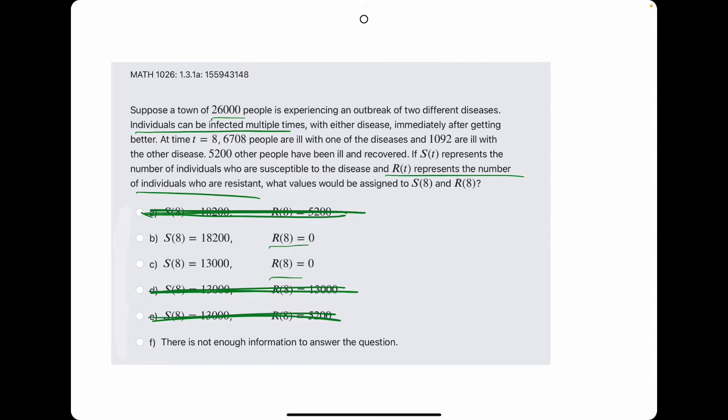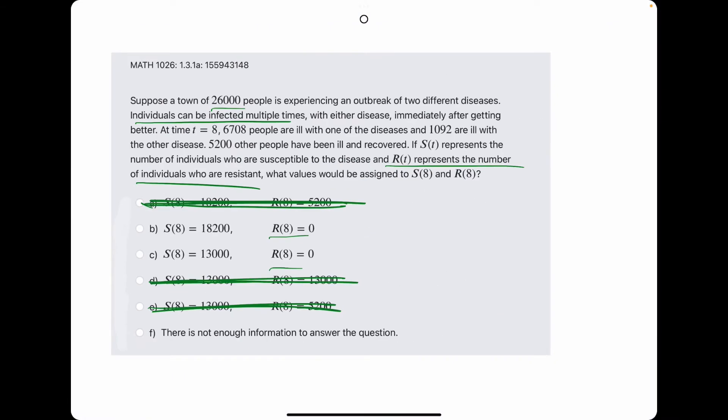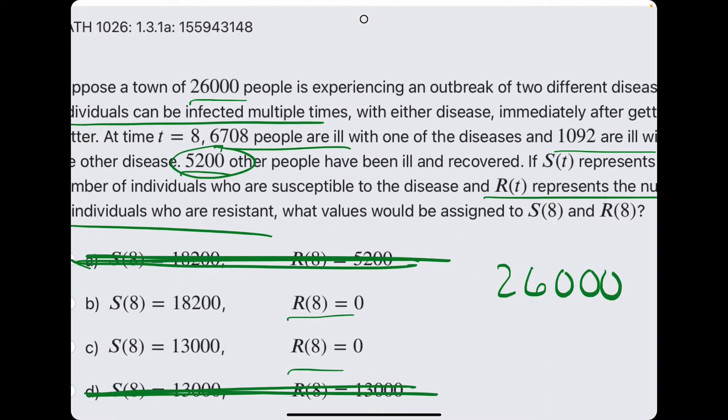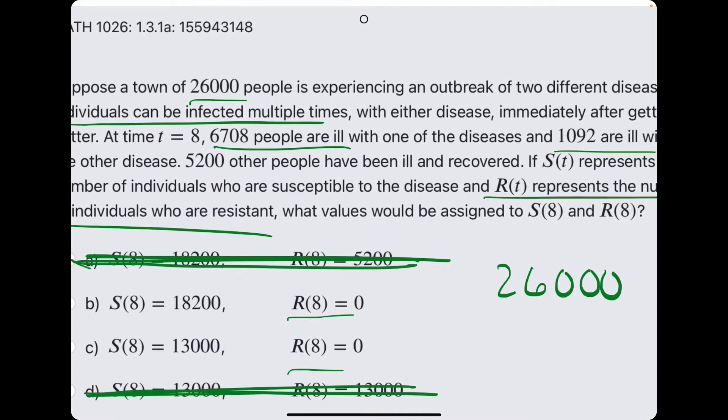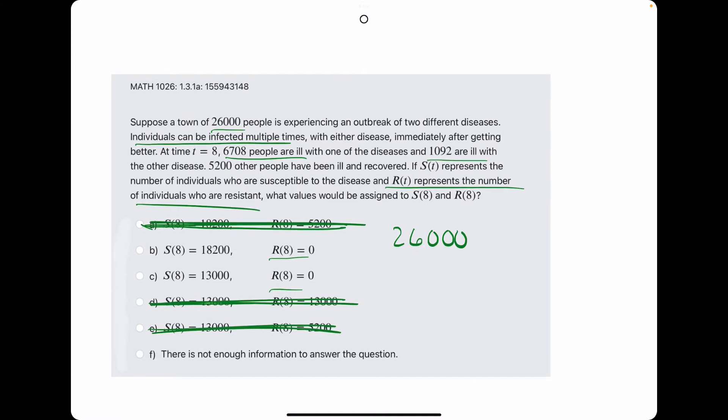And then we just need to calculate the number of susceptible individuals. So, starting with the initial 26,000 population, we are just going to subtract the number of people who are currently ill because the number of people who are ill are not susceptible at the moment. The people who have been ill and recovered, however, are still susceptible because it says they can be infected multiple times, even after getting better. So, that 5,200 is going to remain in the susceptible category.